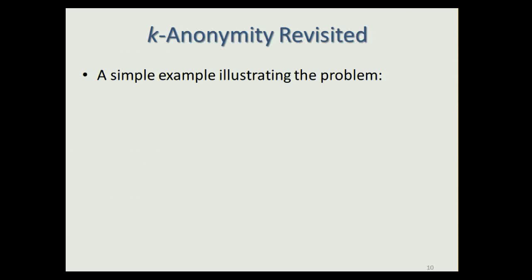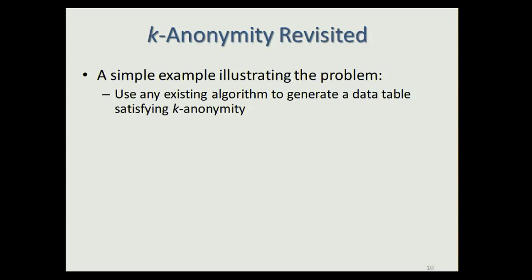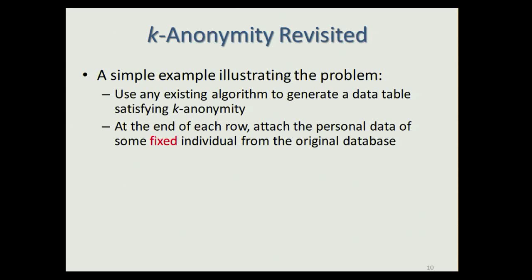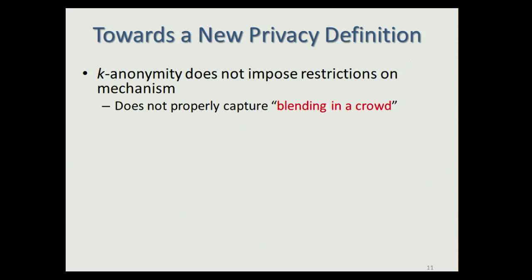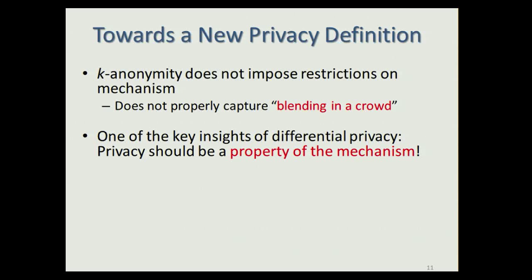For example, suppose you run any existing algorithm to generate a data table satisfying k-anonymity, but then at the end of each row you attach the personal data of some fixed individual from the original database and output the modified table. The output satisfies k-anonymity, but it reveals the personal data of some individual. The problem is that k-anonymity does not impose restrictions on the mechanism — only on the output — and so it does not properly capture blending in a crowd. One key insight of differential privacy is that privacy should be a property of the mechanism, not just the output.